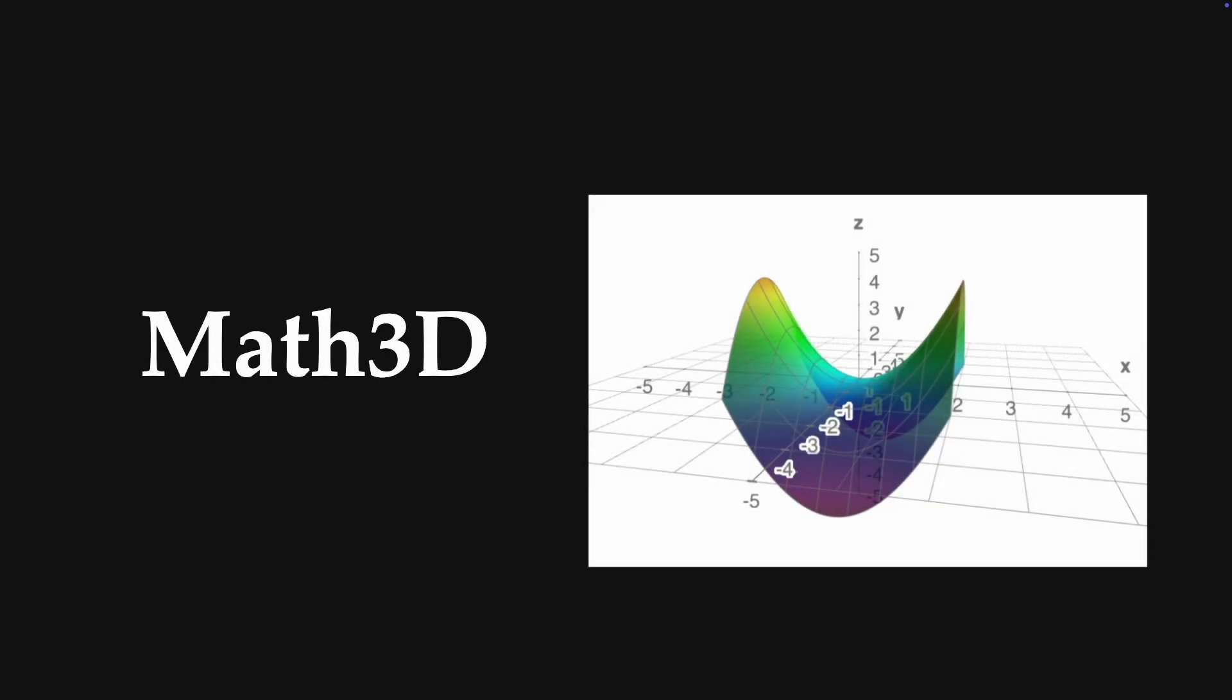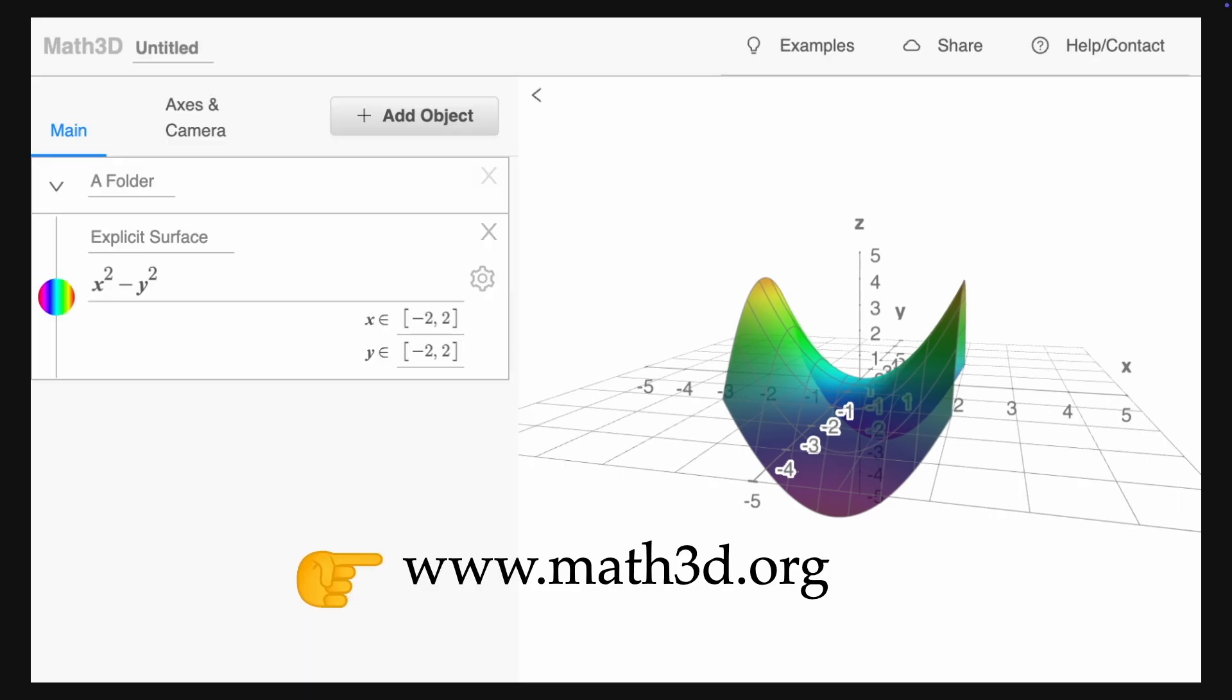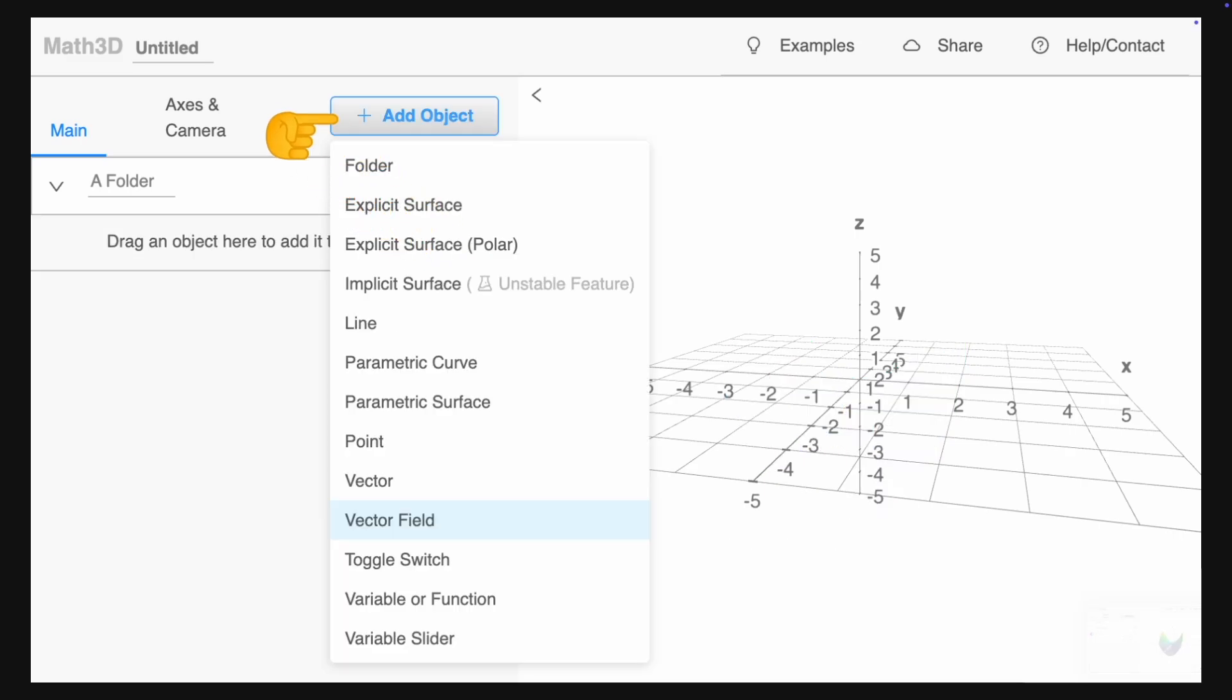The last tool I want to cover here is called Math3D. To open it, simply visit math3d.org. The first example displayed is an explicit surface, and the first thing we have to do is to remove this surface. Now click on the button Add Object and select a vector field.